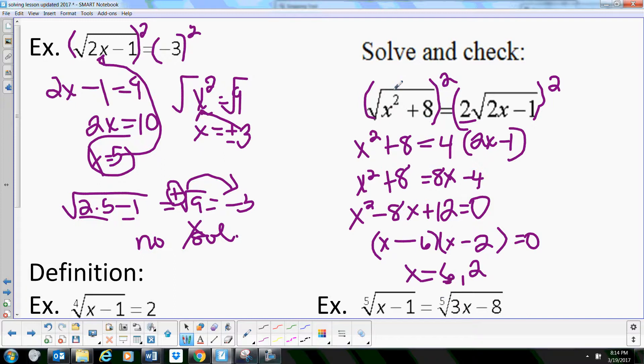Now we need to check these and make sure they work. So let's see, let's plug in that 6 first. So 6 squared plus 8, that's 36 plus 8 which is 44. So we're looking at the square root of 44 which is 2 root 11.